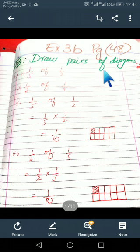Draw pairs of diagrams. Part A, 1 by 5 of 1 by 12, or 1 by 12 of 1 by 5. First we will take 1 by 5 of 1 by 12. Of means multiplication. It's 1 by 60. So we have to draw a table, draw a diagram. Total 60 parts and 1 is colored. The second one is the same. But if we rearrange the fractions, the answer will be the same, and the diagram will be the same.